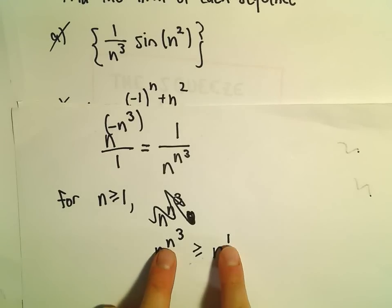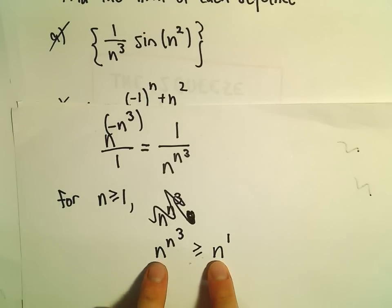Imagine if you plug in 1: you'll have 1 to the first on both sides. If you plug in 2, for example, you're going to have 2 raised to the power of 2 cubed, so 2 to the 8 is certainly greater than or equal to 2.